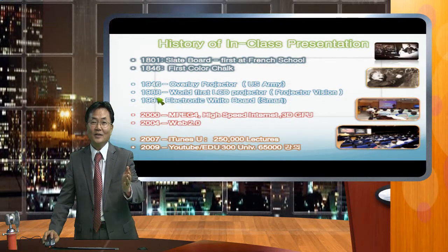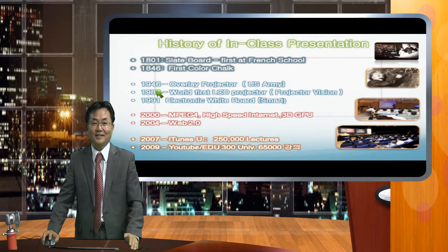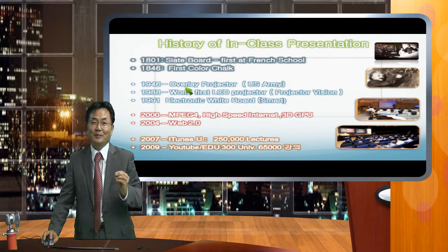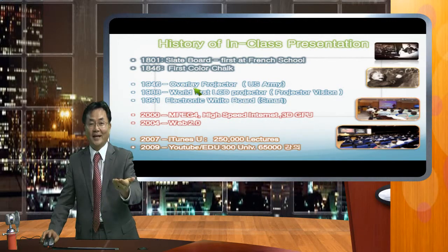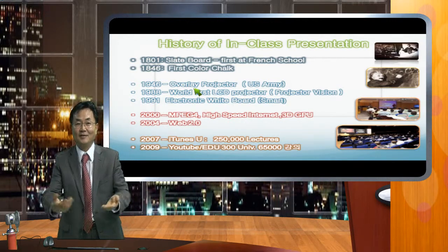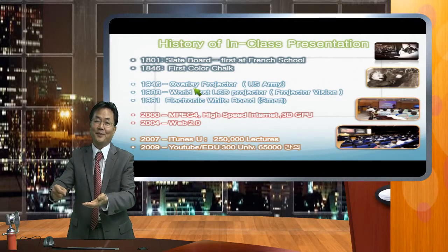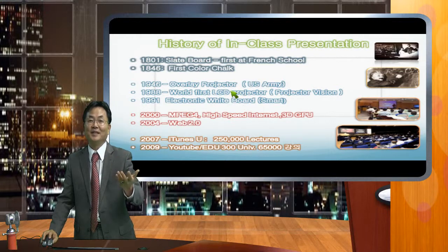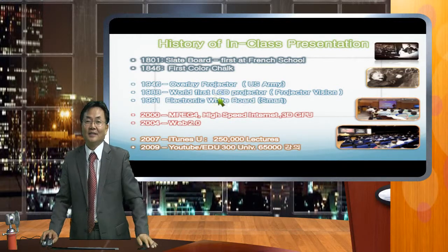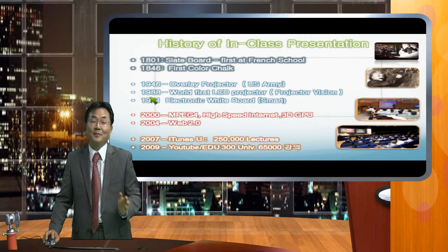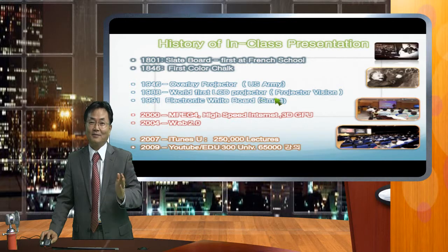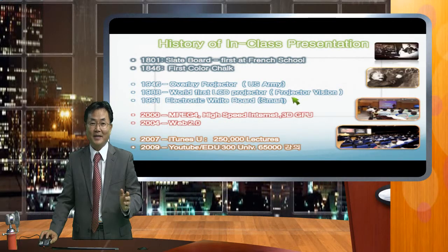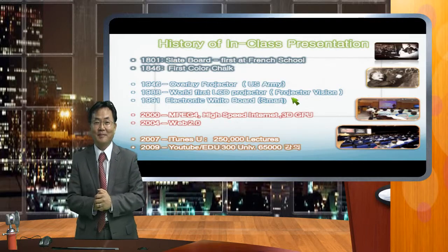About 100 years later, people developed overhead projectors — they made transparent paper to draw on, and then had a projector like a movie machine. After about 40 years, the world's first LCD projectors came from a projector vision company — very expensive machines but very attractive.